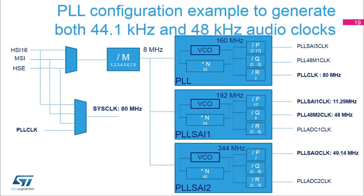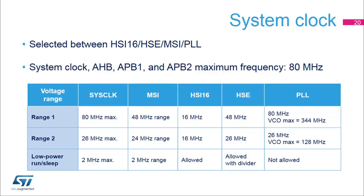Here is a configuration example where the first PLL is configured to generate the 80 MHz system clock. The second PLL, PLL-SAI1, is used to provide the 11.29 MHz audio clock used to generate a sample frequency submultiple of 44.1 kHz, and to provide the 48 MHz USB clock. The third PLL, PLL-SAI2, is used to provide the 49.14 MHz audio clock used to generate a sample frequency submultiple of 192 kHz. The system clock is selected between the HSI16, HSE, MSI, and PLL output.